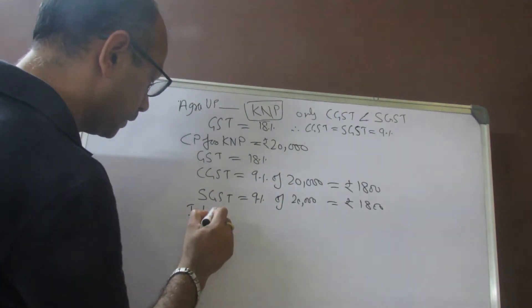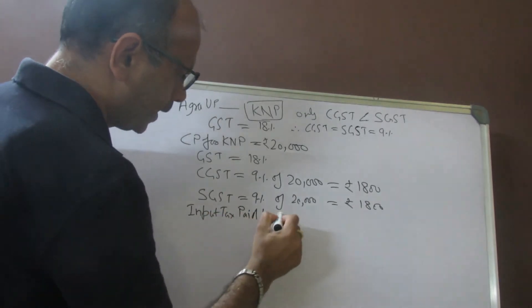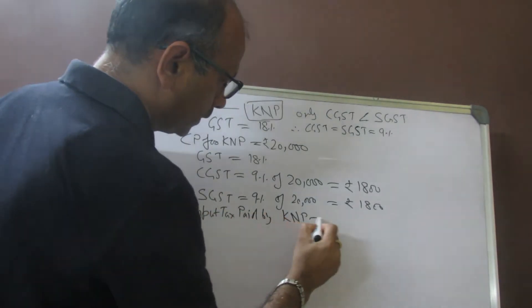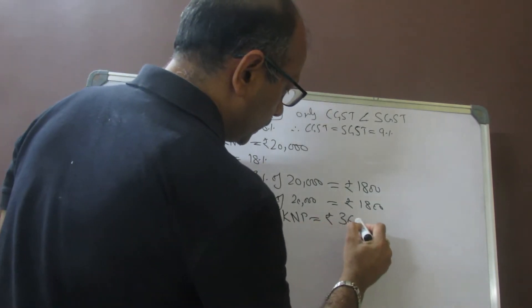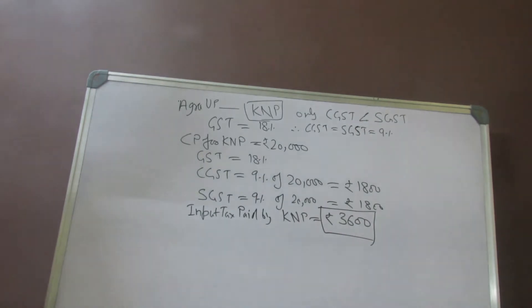So what is the input tax paid by Kanpur dealer? It is rupees 3,600.